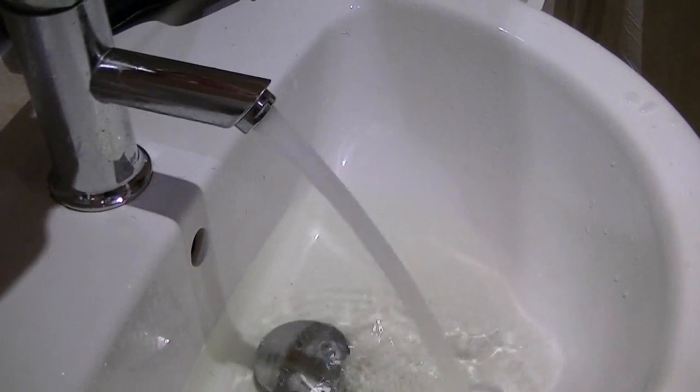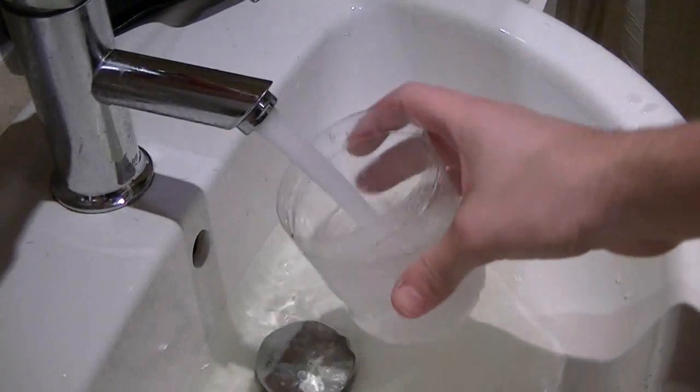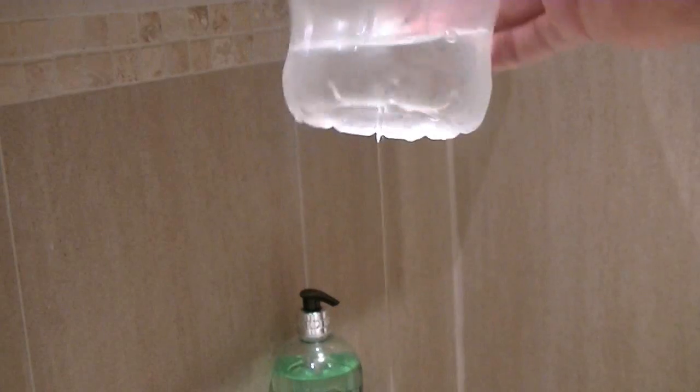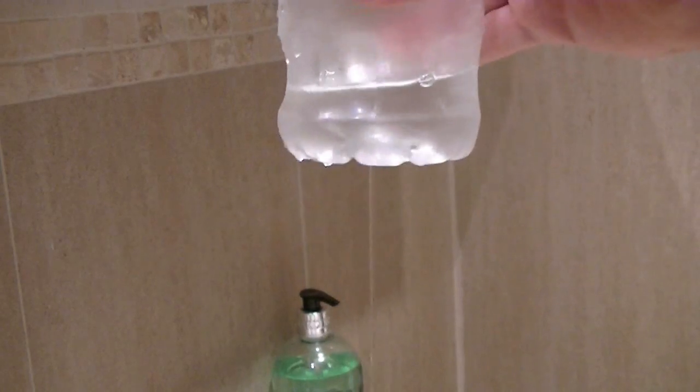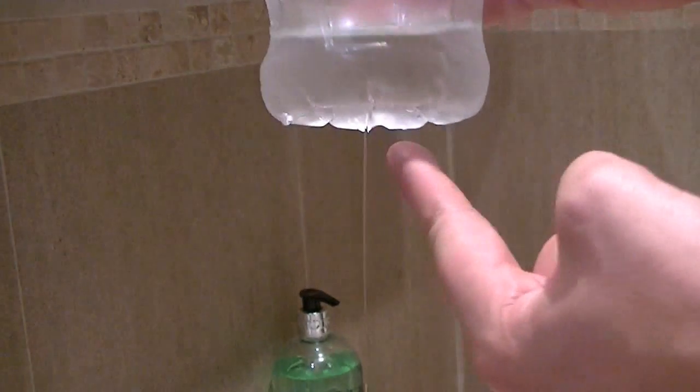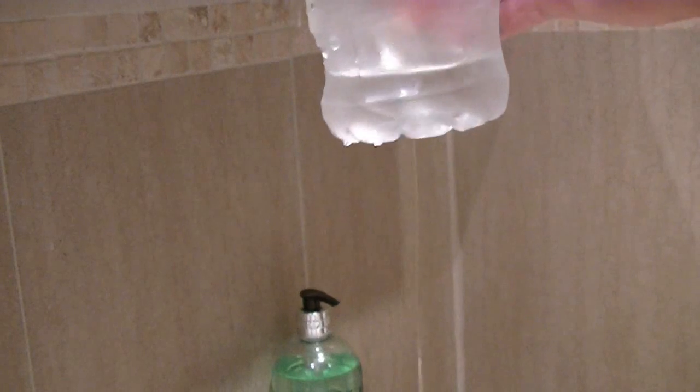For this demonstration, you're only going to need three things: a tap or some sort of running water. I'm using a bottle with a small hole cut in the bottom; this allows the water to drizzle at a slow and steady speed. The next thing you're going to need is some sort of material that will allow you to generate a static charge - a towel should do the trick.